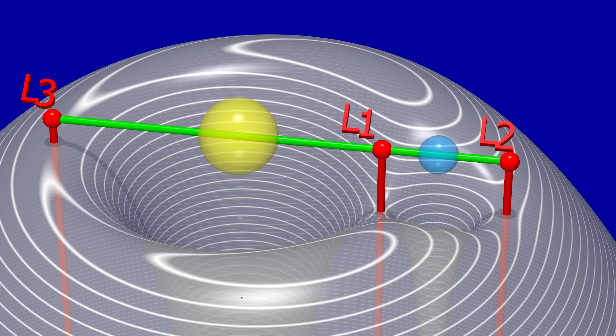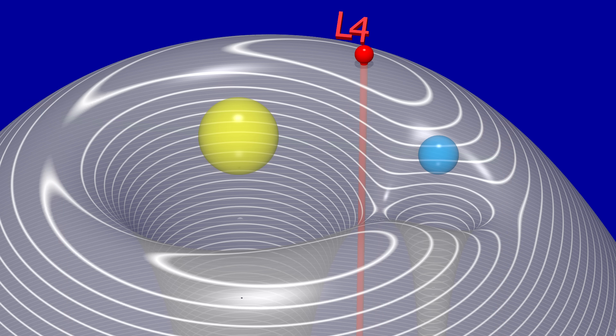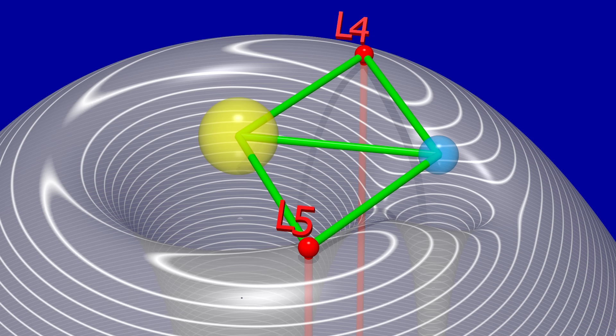So L1 through 3 were all actually discovered by Leonard Euler about 50 years before Lagrange's work. But Lagrange did figure out L4, which is on a peak in the potential, and L5, which is on the other side. Now, these two together, they both form equilateral triangles with the two bodies. And that means that Jupiter's Lagrange points are as far from Jupiter as the Sun is from Jupiter.